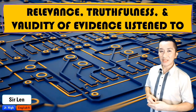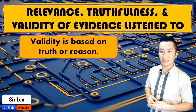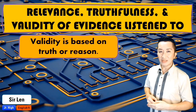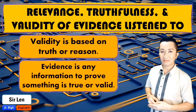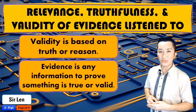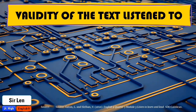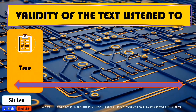How do we determine if the information we listen to is true and valid? Validity is based on truth or reason — the quality of being logically and factually sound and acceptable. Evidence is any information to prove something is true or valid. In determining the validity of the text listened to, the text must meet the following criteria.